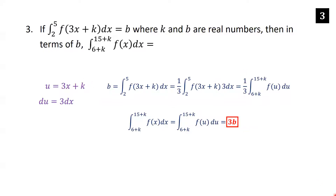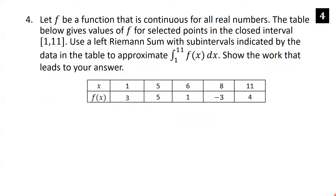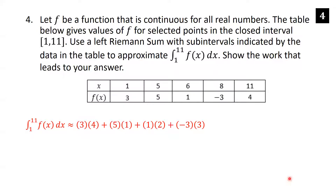Let f be a continuous function. Using a left Riemann sum with sub-intervals indicated by the data in the table, approximate the integral from 1 to 11 of f(x) dx. The sub-intervals are [1,5], [5,6], [6,8], and [8,11]. For a left Riemann sum, we choose the left endpoint of each interval and evaluate f there.